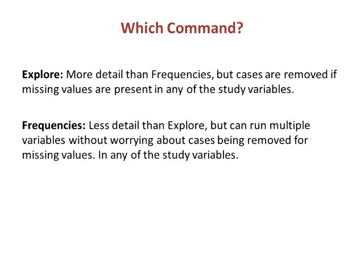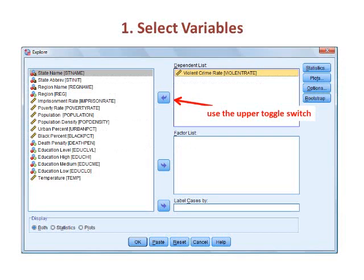Since we have already learned how to use the frequencies command in the first video in this two-part series, we will use explore here to analyze violent crime rate, and later highlight the positional measures in the frequencies output. First, we select our variables using the explore command.